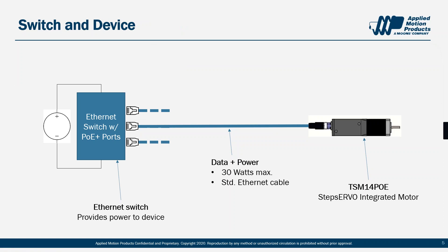PoE Plus delivers up to 30 watts per port using standard Ethernet cable. We recommend Category 6 cable for most installations. The only things you need to take advantage of PoE are compatible devices on both ends of the network connection — on the power supply side, you'll have an injector or a switch, and on the device side, you'll have a TSM-14 PoE step servo integrated motor. We'll talk more about injectors and switches in a bit, but for now I'd like to focus on the integrated motor.